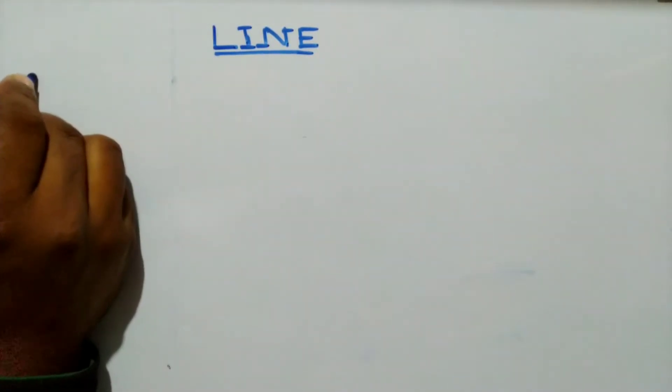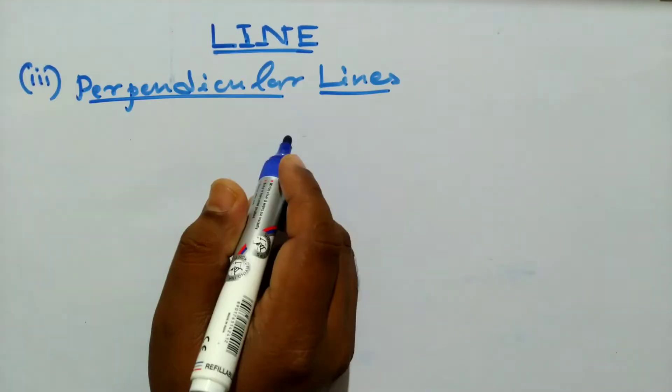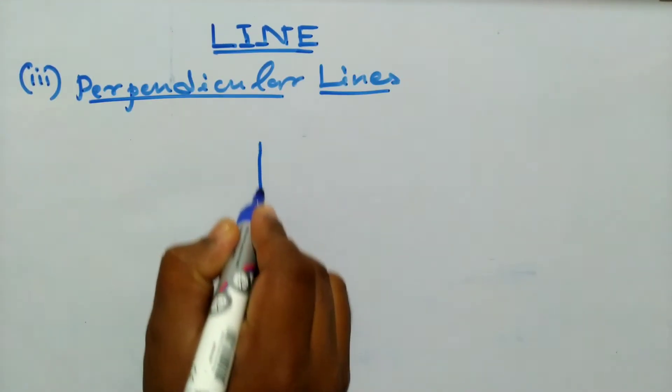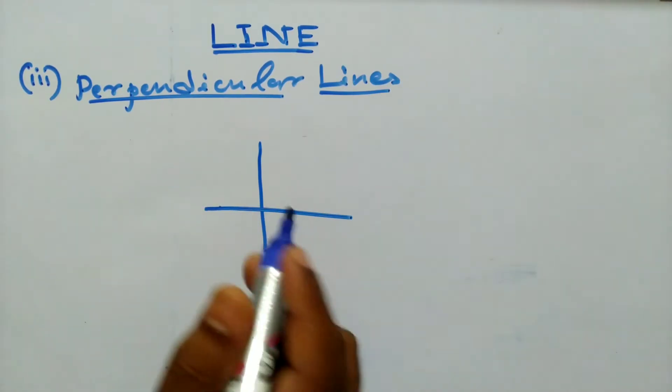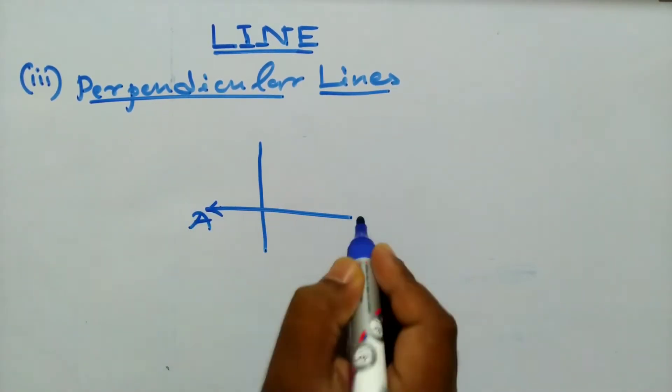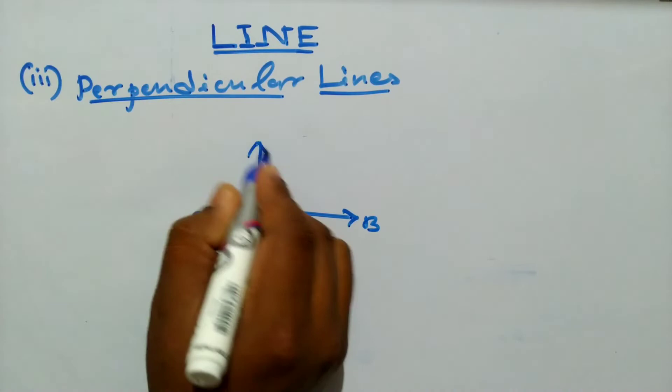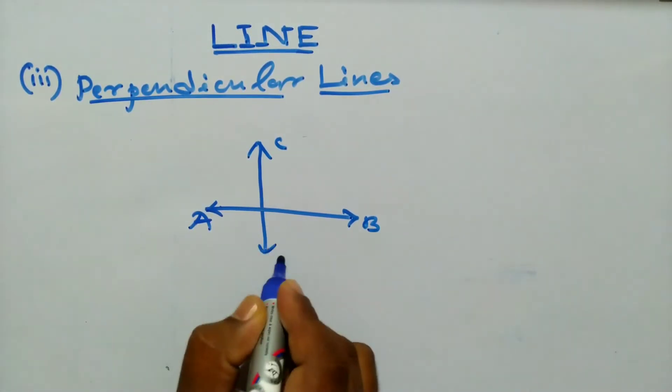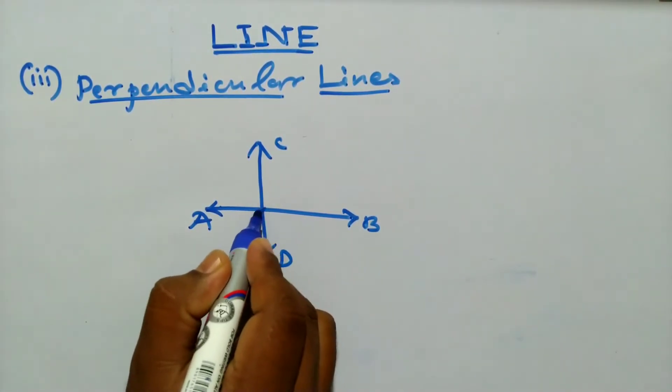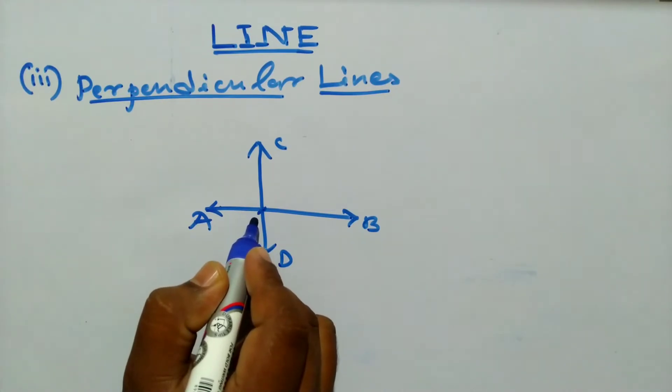Number three is perpendicular line. First draw a line, again draw another line. This line is AB, this line is CD. Name the intersecting point P.